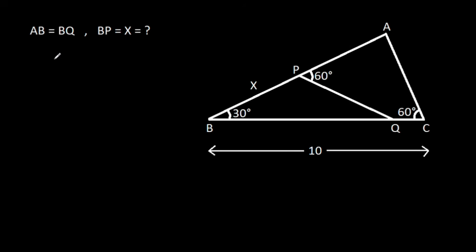In this video, we have been given that AB is equal to BQ and angle ABC is 30 degrees, angle ACB is 60 degrees, angle APQ is 60 degrees and BC is 10. If BP is X, then we have to find X.